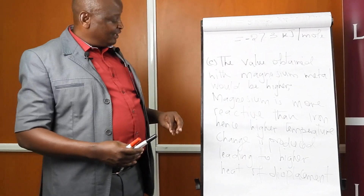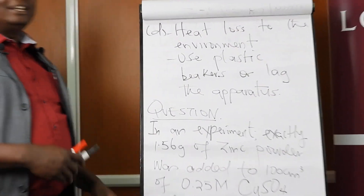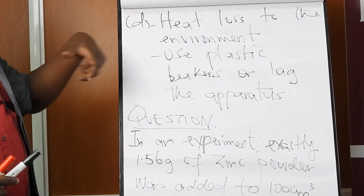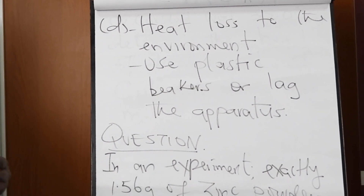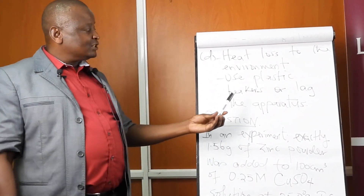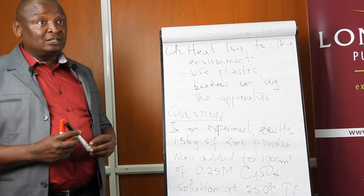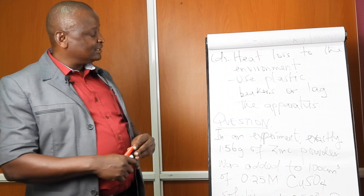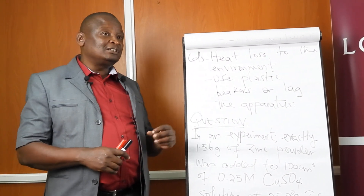For all experiments on energy changes, the main source of error is heat lost to the environment through the apparatus — some apparatus even absorbs some of the heat, affecting the final answer. To minimize this error, we mainly use plastic or polystyrene containers, since plastics do not conduct much heat, or we do lagging — wrapping the apparatus in materials that do not conduct heat, such as cotton wool.